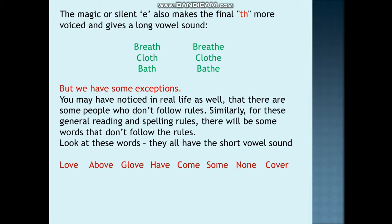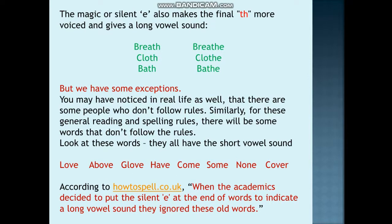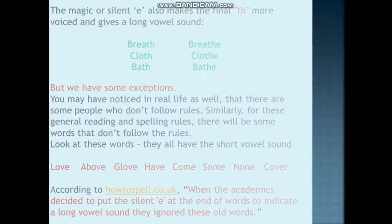To always remember, to all the rules that we have learnt, there will be some exceptions. According to howtospell.co.uk, unhone kaha hai ki when the academics incorporated silent E, that time they decided to put the silent E at the end of words to indicate a long vowel sound. That time they ignored these old words. Ye kuch purane words ko unhone ignore kiya. Unhone - they are not following the rules, we can't help it, hai na. To just remember that there will be some exceptions.